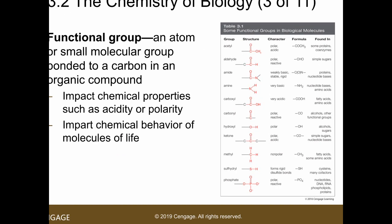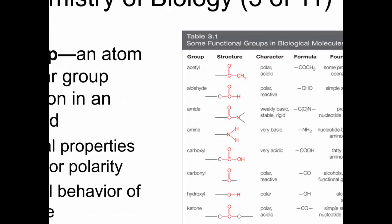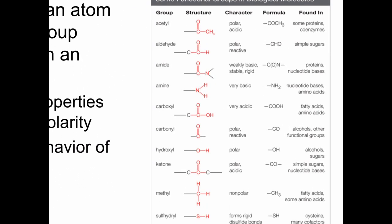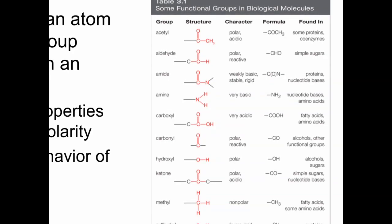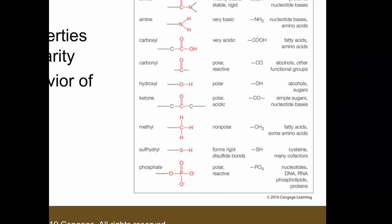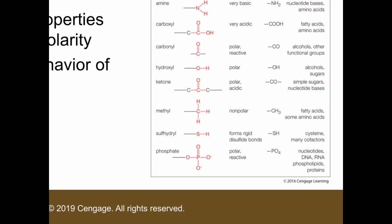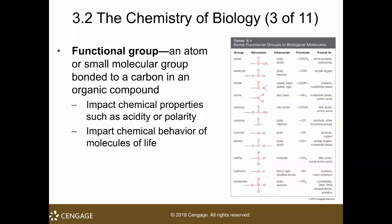Here are the common functional groups found in most biological molecules. You have the acetyl group, the aldehyde group, the amide, and the amine. As you can see, there is a large variety of structures — you see oxygens with single bonds and double bonds, you have nitrogens, and so on. When you see them, those are functional groups. I will be linking another video about functional groups in the folder.